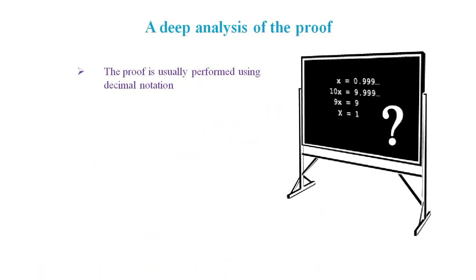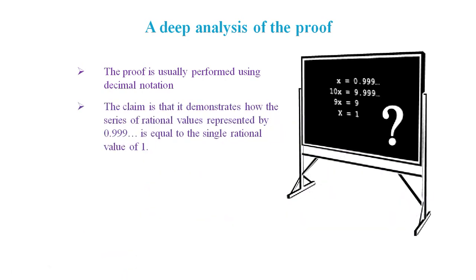You will usually see this proof performed using decimal notation, but the decimal notation represents a series of rational values, and its claim that this proof shows how this particular series of rational values all add up to the single rational value of 1.